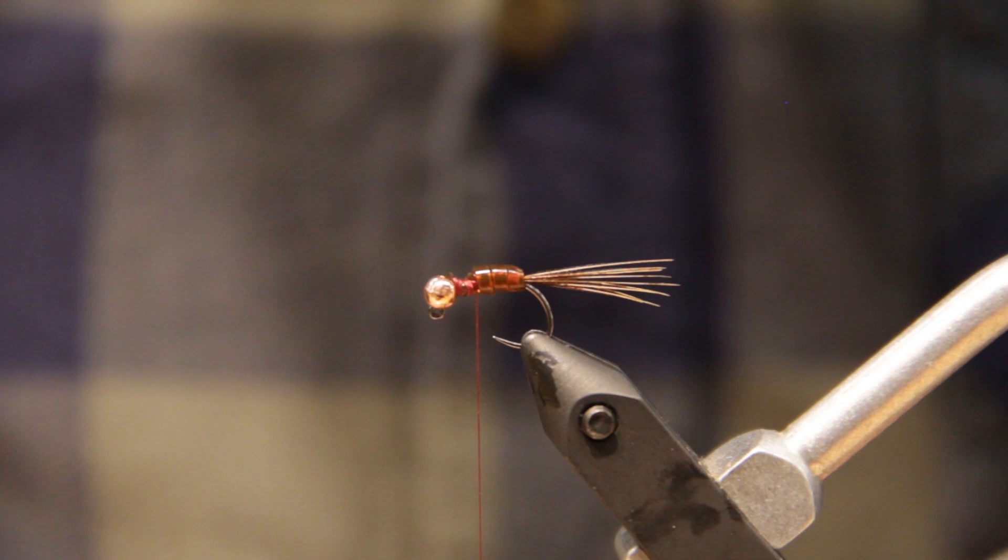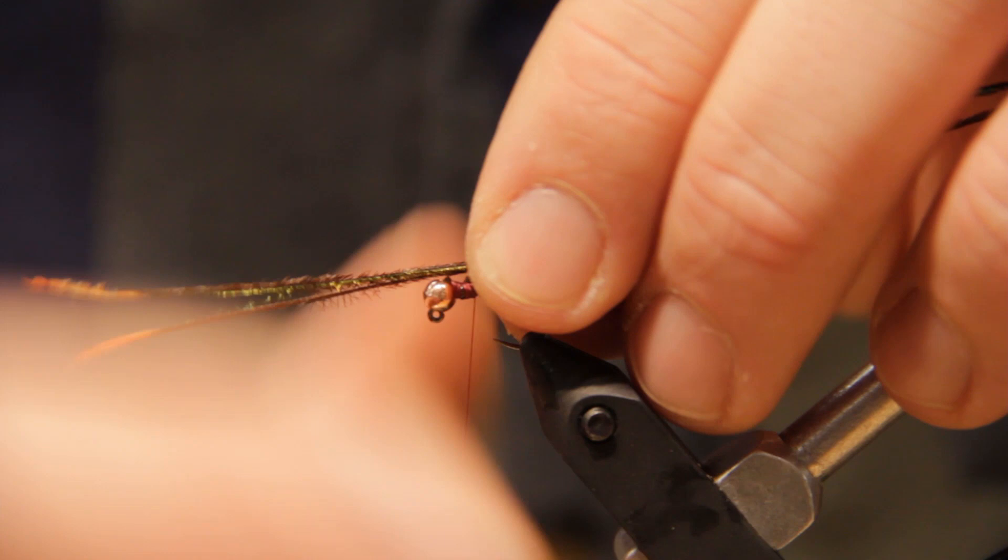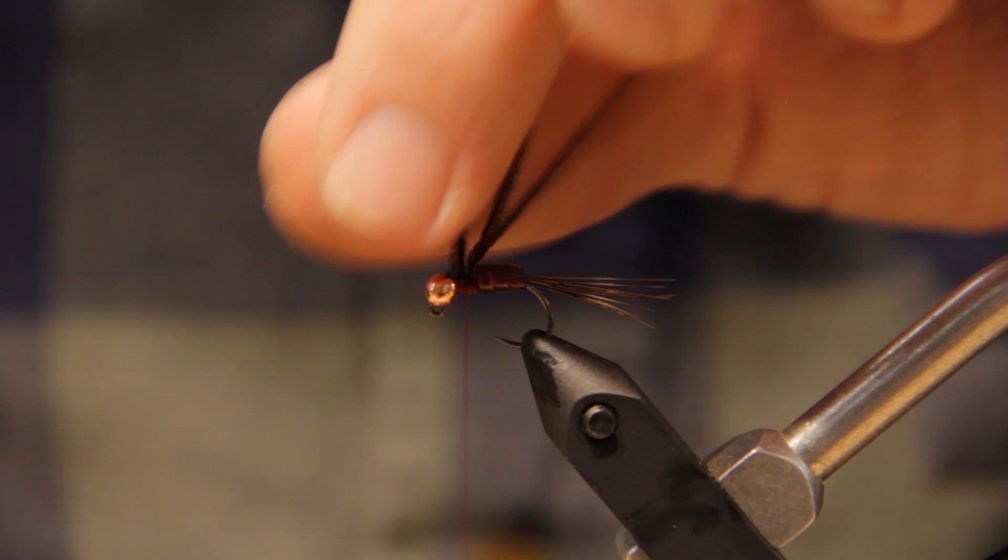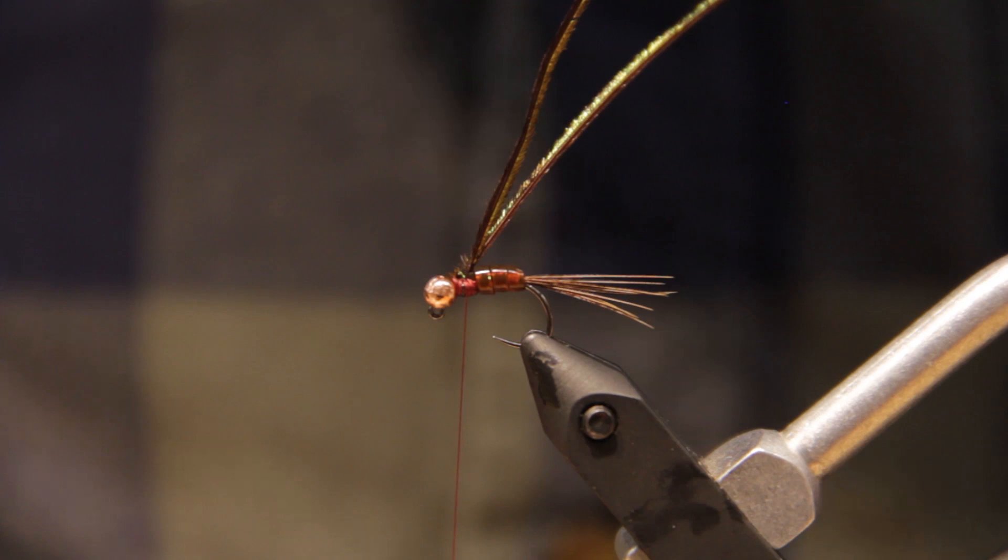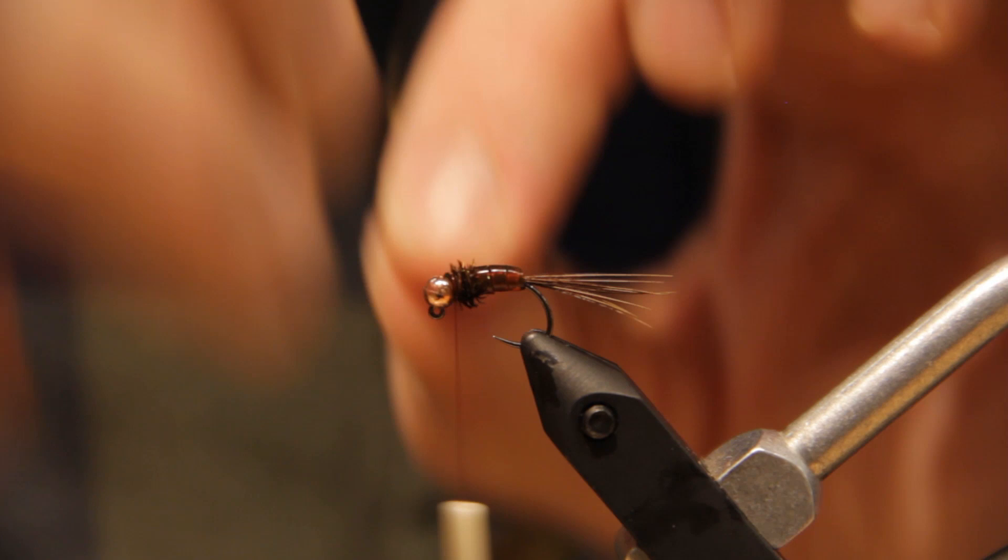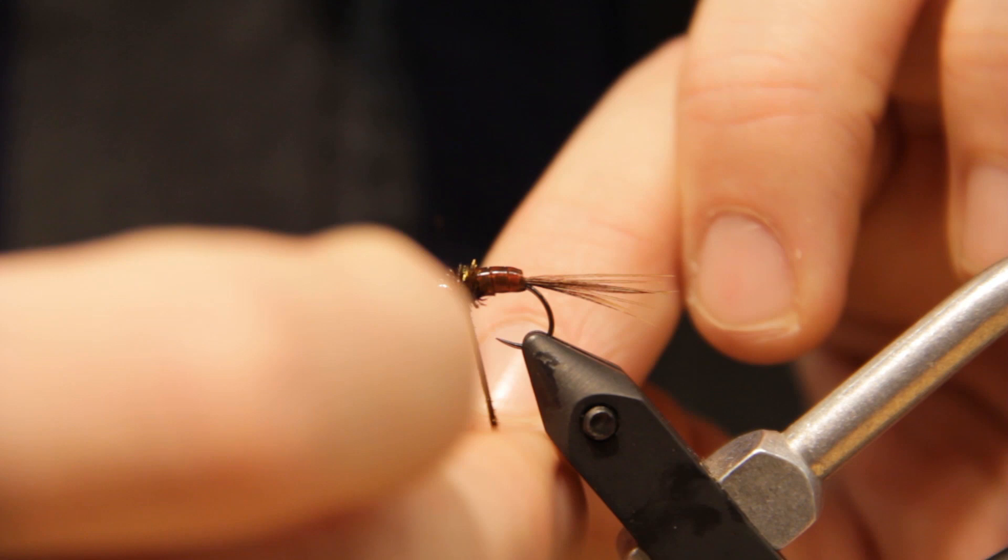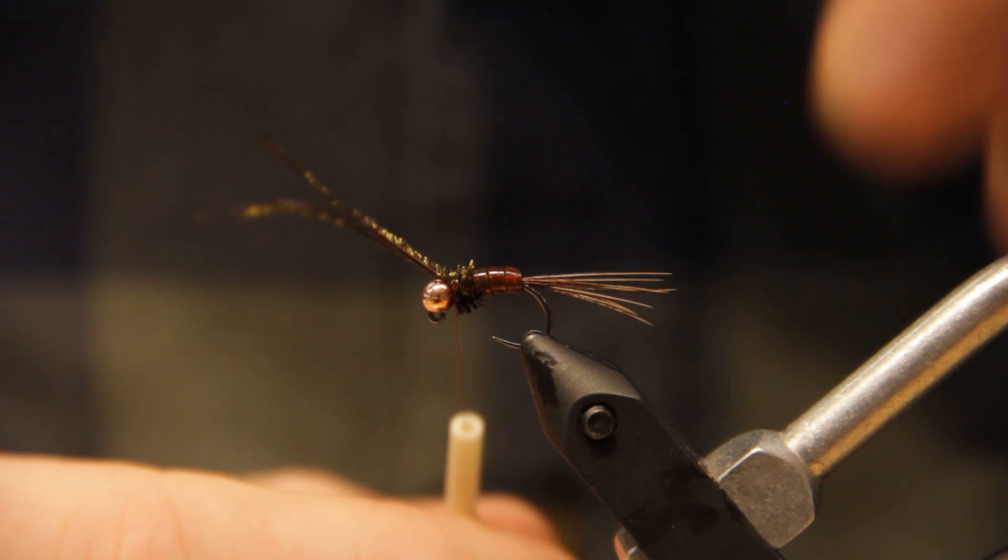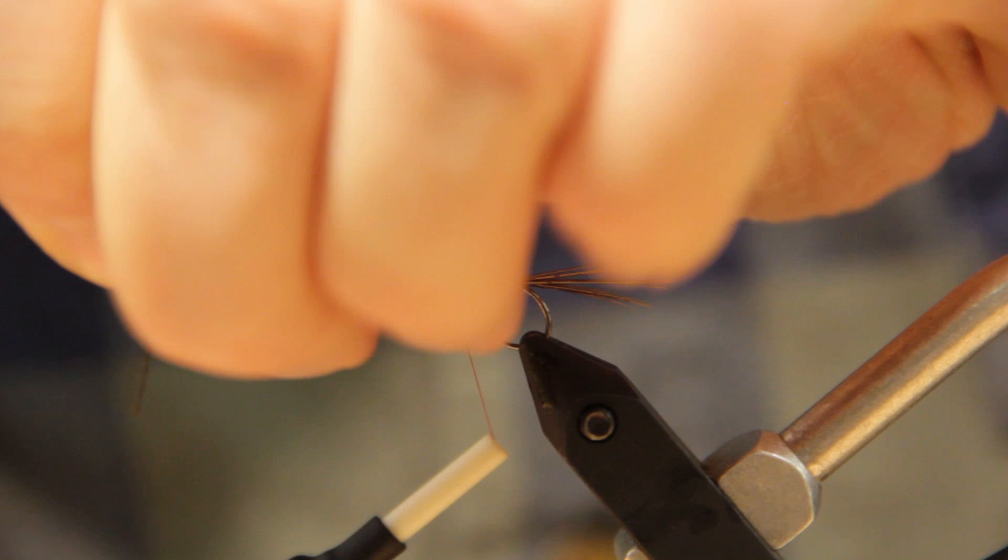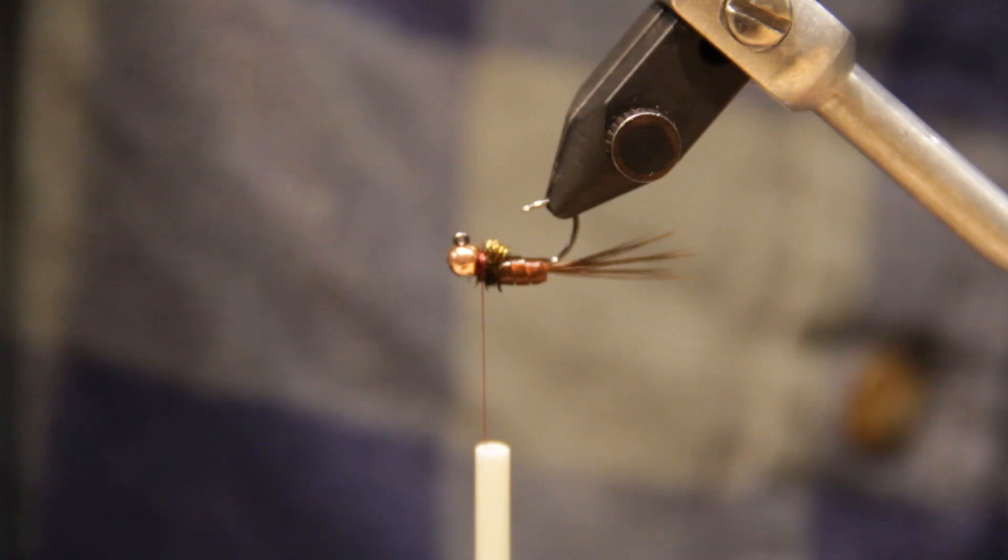So next, what I'm going to do is I'm going to take a dyed red peacock curl, two strands. I'm just going to wrap that, build up a little bit of a collar. I want to tighten that the whole way up to the bead. Alright, so once we're there, I'm going to turn the fly over.